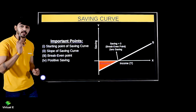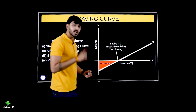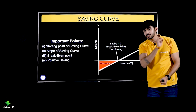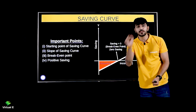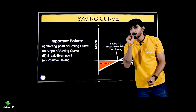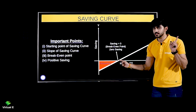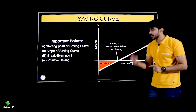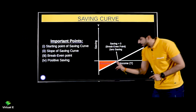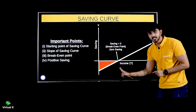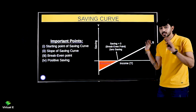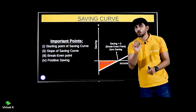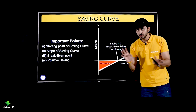Third point: break-even point. When your income is equal to your consumption, you will save zero — that is the point of no change in savings, or zero savings. That is the break-even point. Last point: we have seen three phases — here was negative saving, here was zero saving, and here was positive saving.